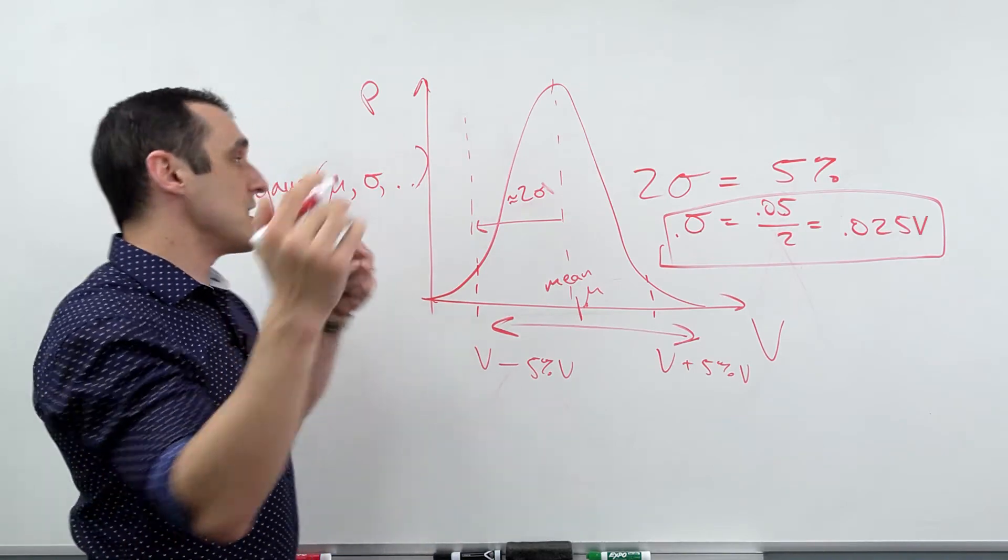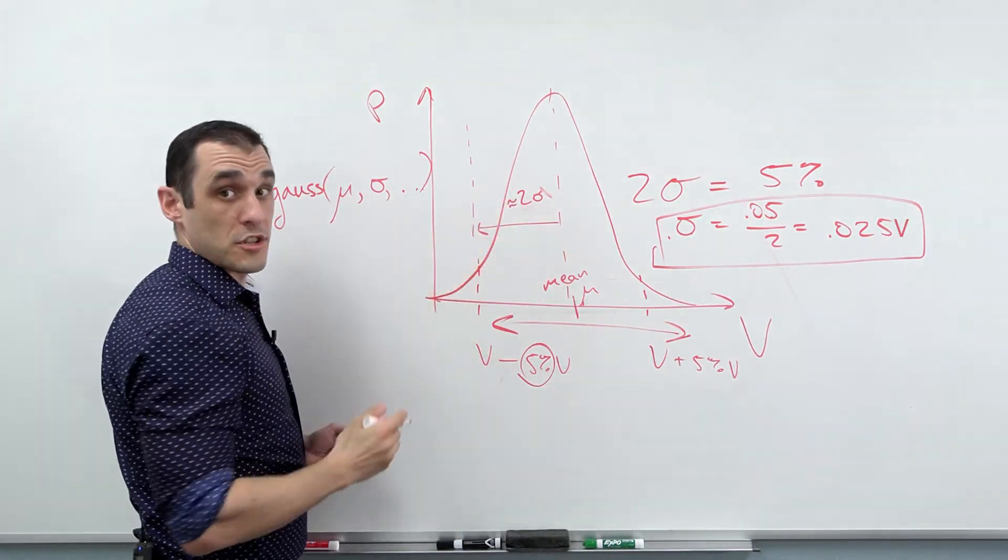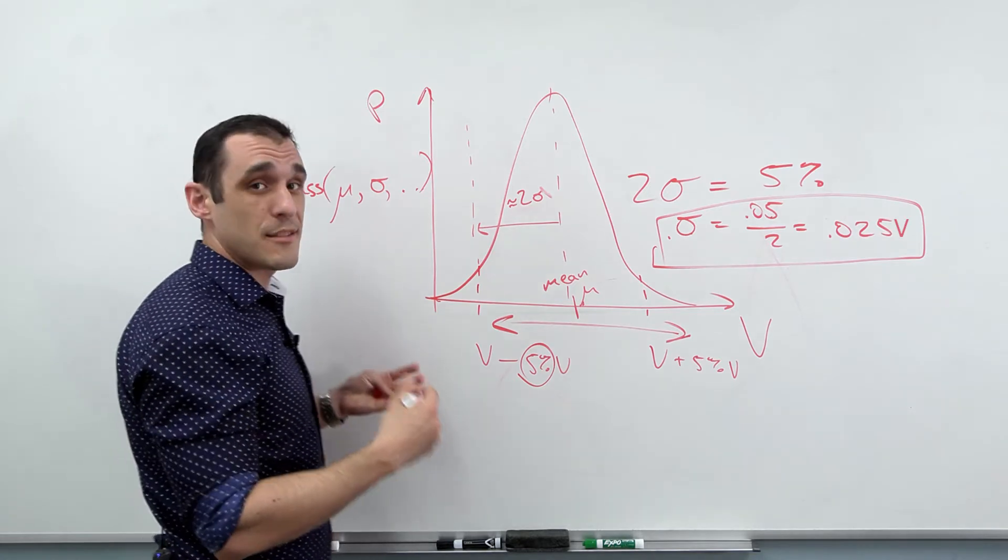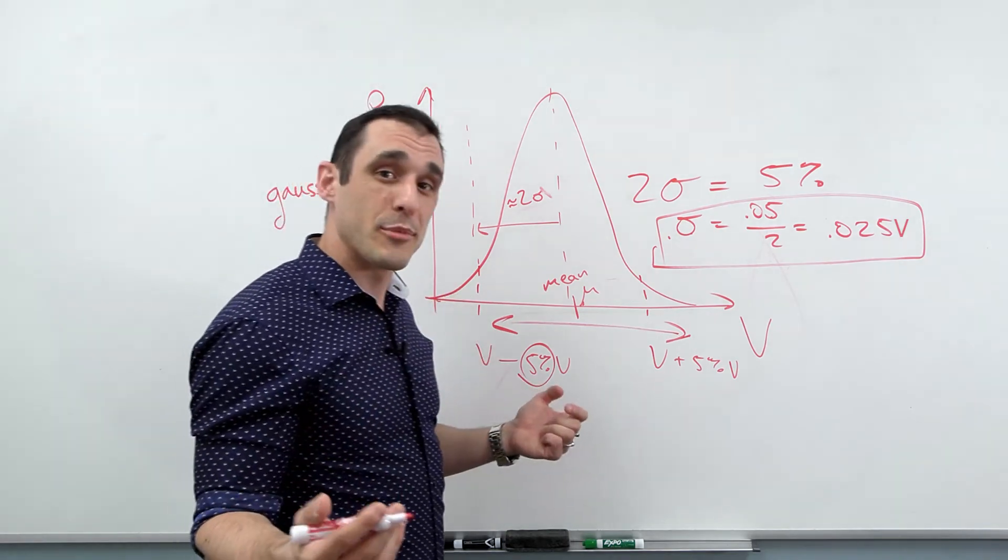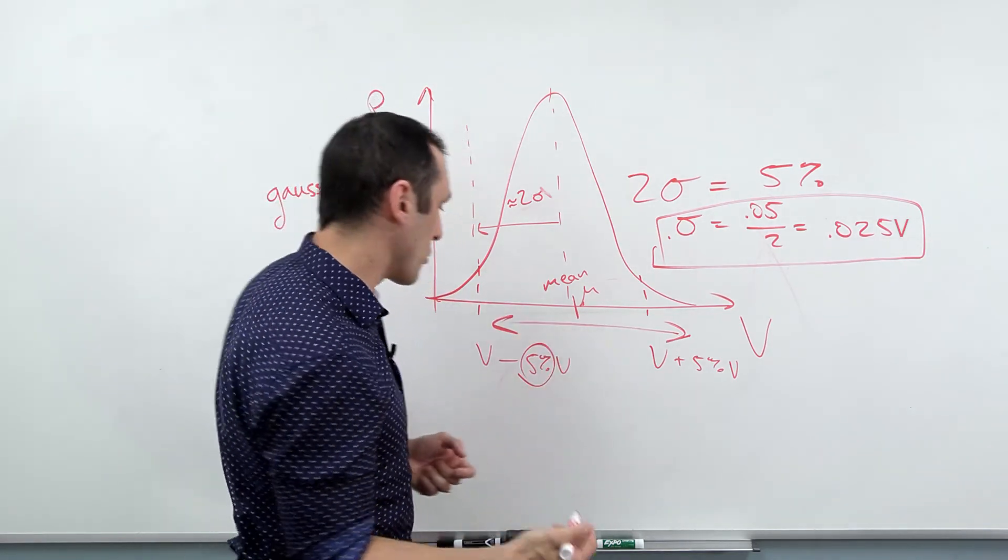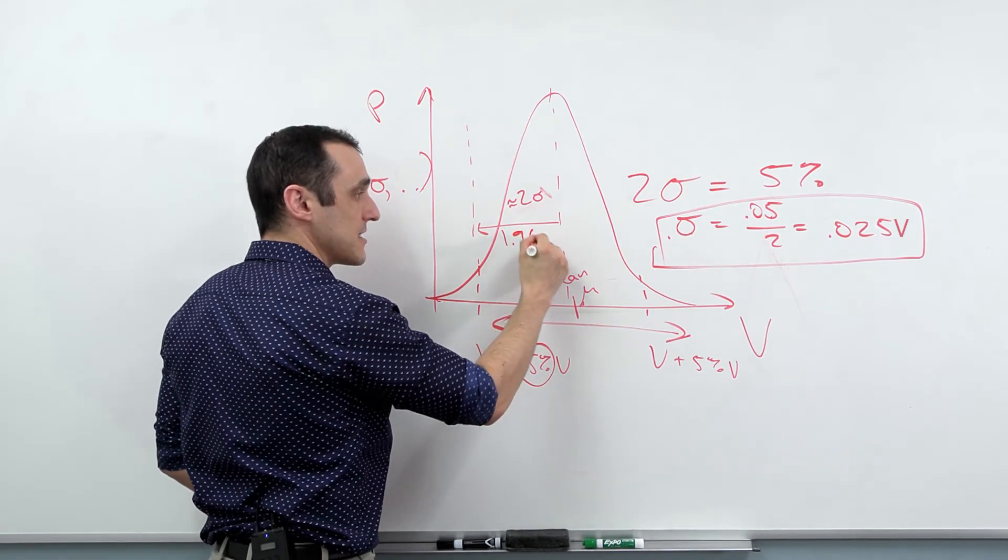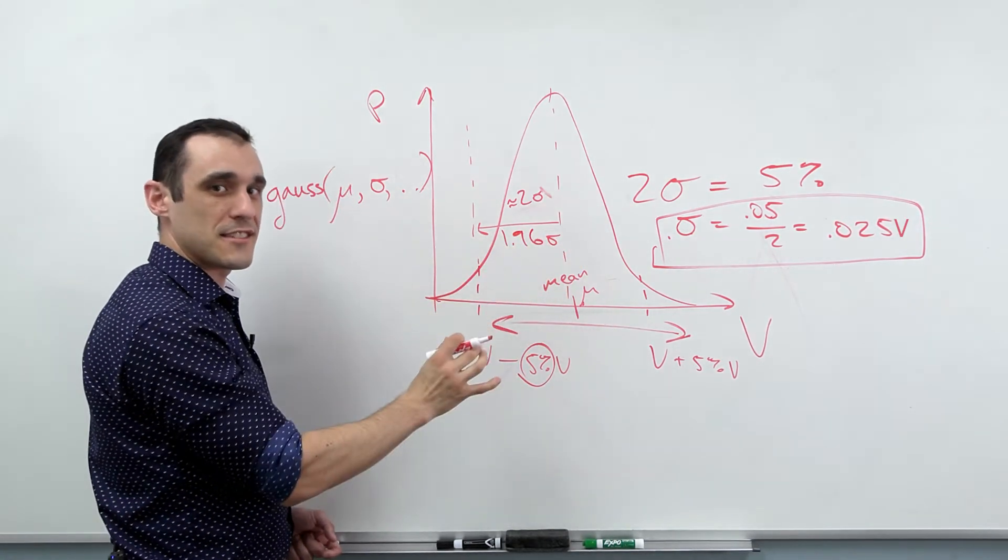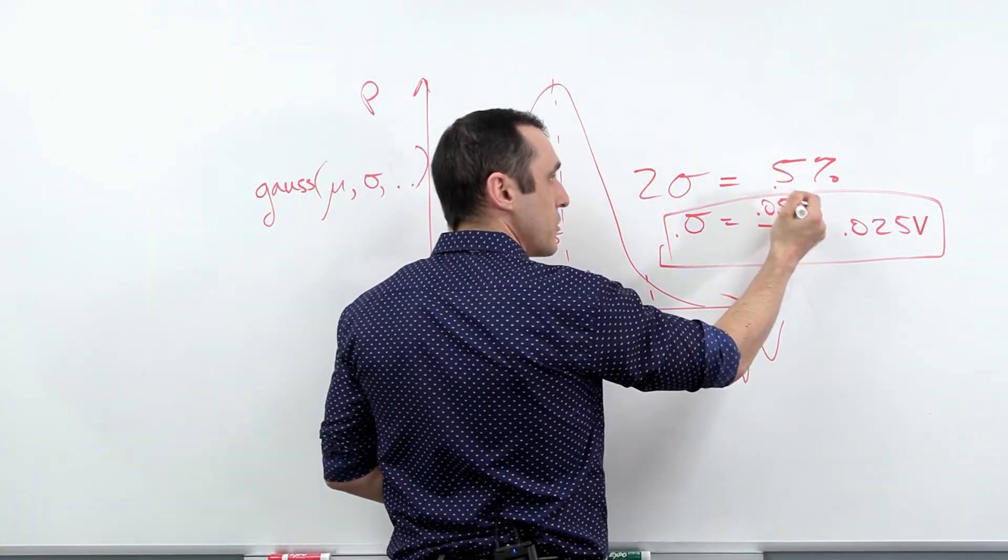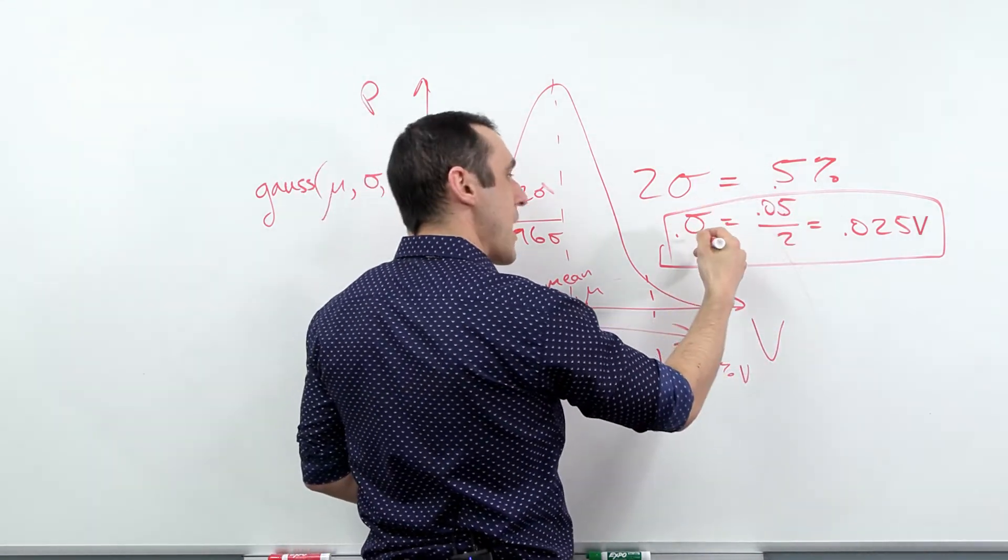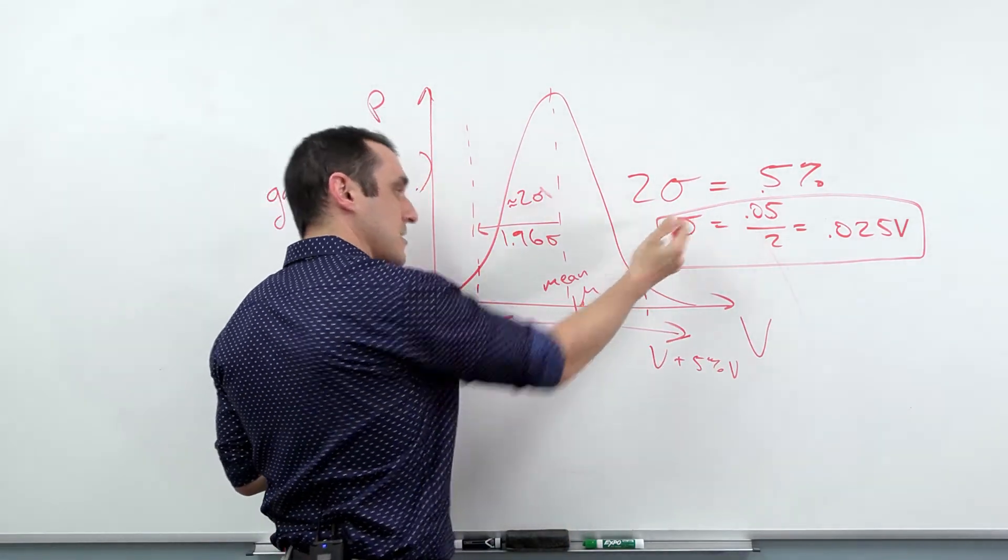So keep that in mind. In some simulation programs, you don't just enter in the 5%. You have to actually take it and divide it by two. The two here is just an approximation because it really depends on how much data the manufacturer used to get that 5% number. So if they used an infinite number of components or an infinite number of test measurements in order to quantify this tolerance value, this is going to be two. This distance here is actually going to be 1.96 sigma. So just slightly less than two. In general, we can use two as a decent approximation in order to convert a tolerance value. In this example, it's 5% over to a standard deviation value. And in this case, we're just taking it and dividing it by two in order to determine this statistical quantity.